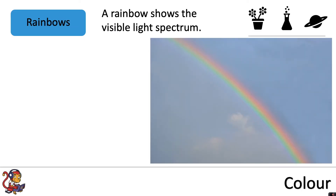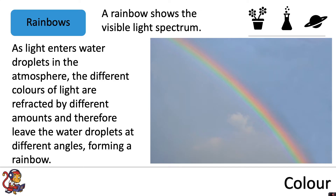A rainbow shows the visible light spectrum. As light enters water droplets in the atmosphere, the different colours of light are refracted by different amounts and therefore leave the water droplets at different angles, forming a rainbow.